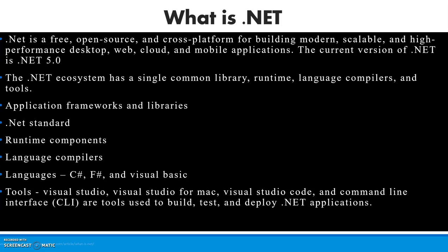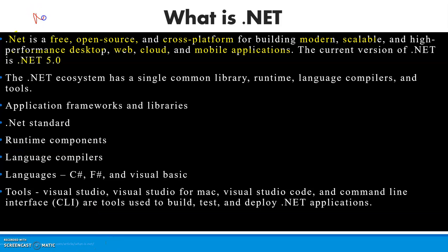Now, what is .NET? .NET is free and open source — we've already downloaded it, so we know it's free. It is cross-platform, meaning you can build on other operating systems and use it on other OS as well. It is used for building modern, scalable, and high-performance desktop, web, cloud, and mobile applications. The latest version is .NET 5.0, launched in November 2020.